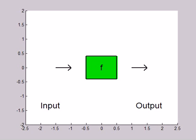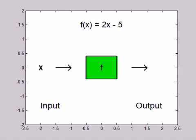This video illustrates the machine analogy for functions. Imagine a conveyor belt taking some input or x value into a machine, which is the function, and spitting out an output, which is the function value, f of x.